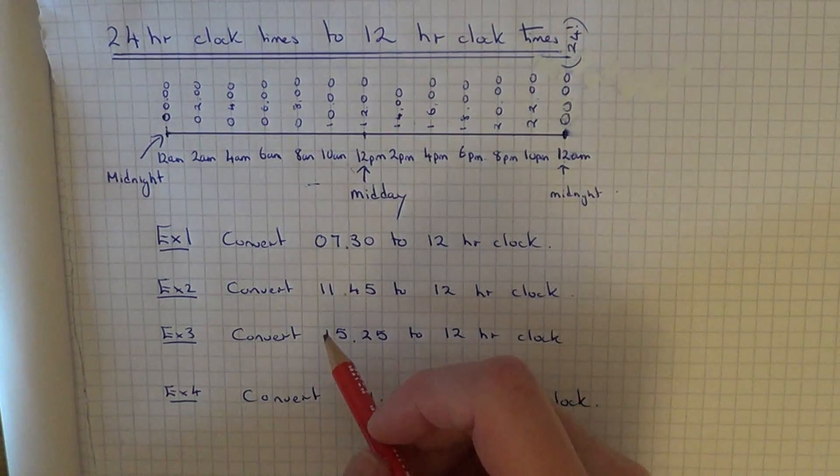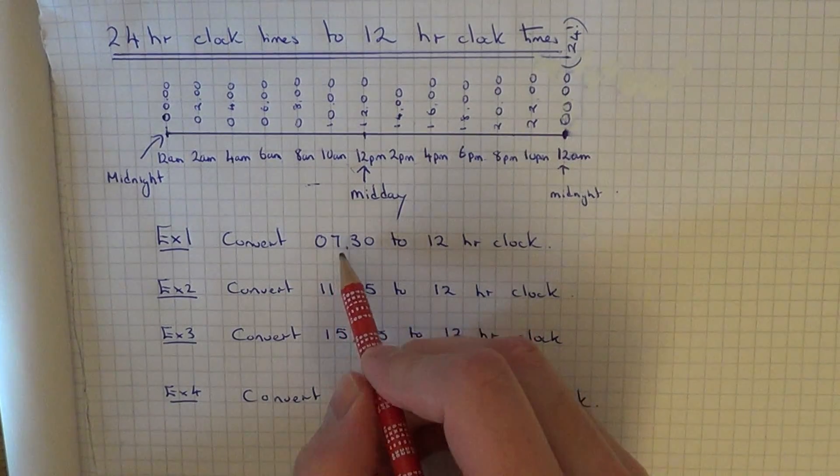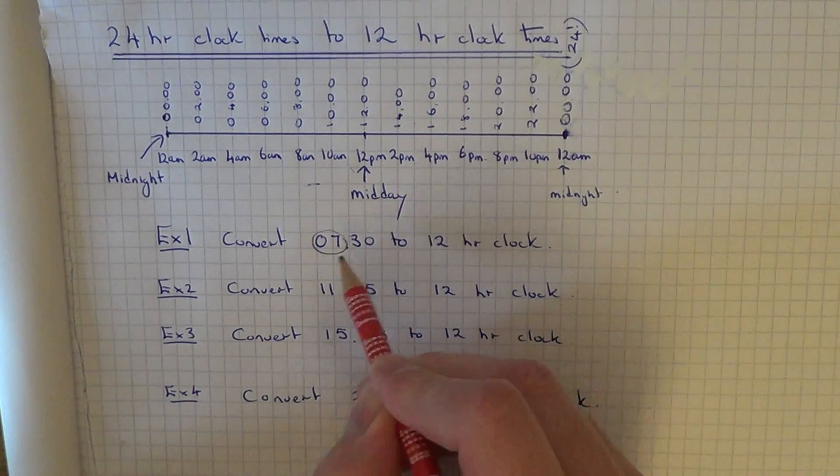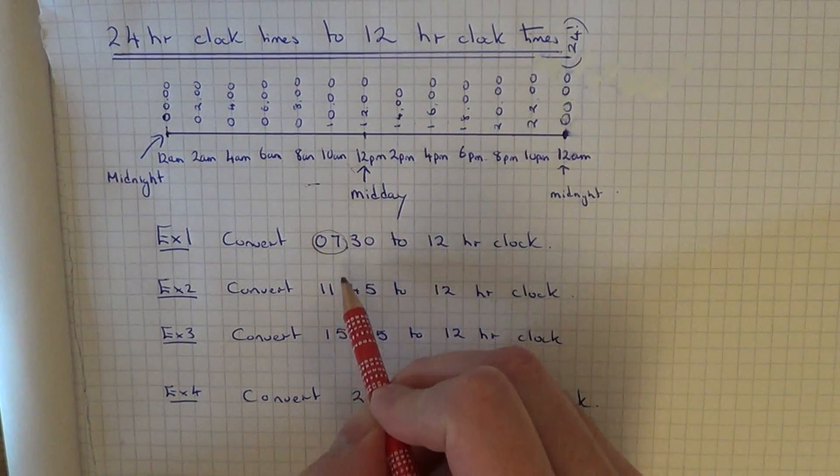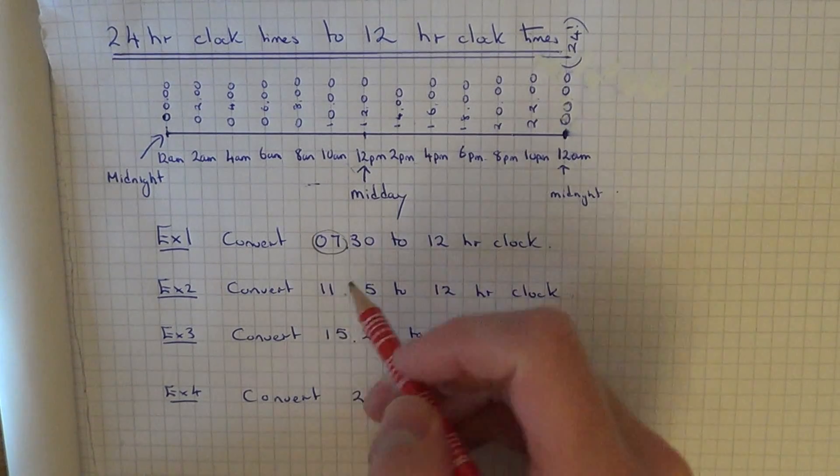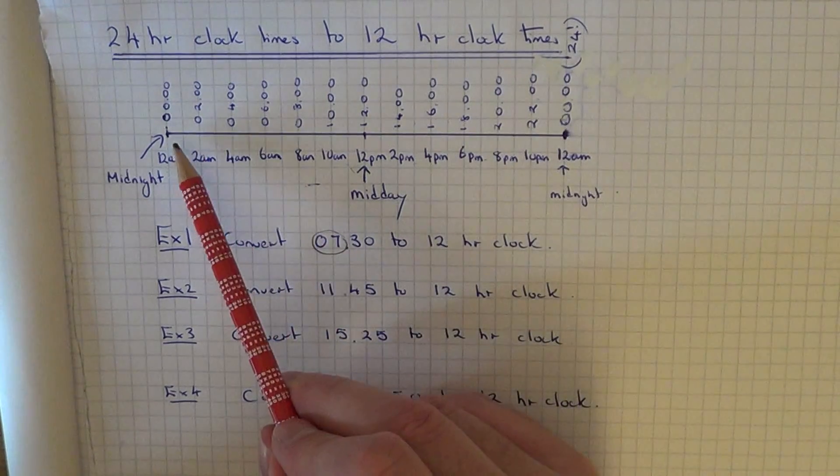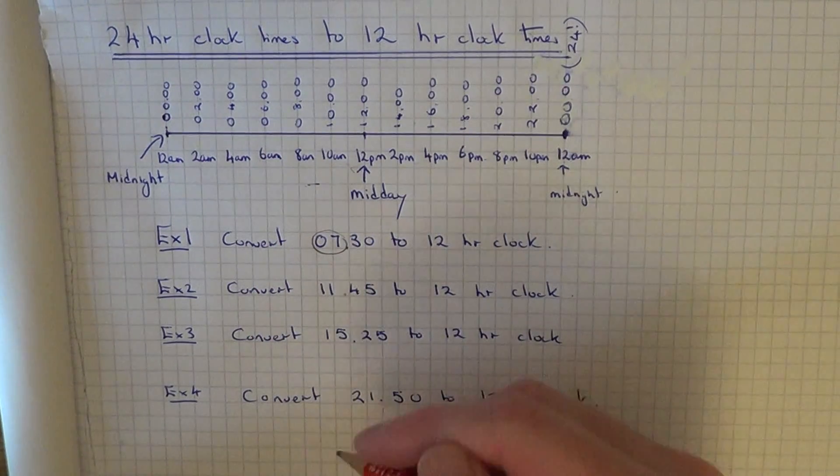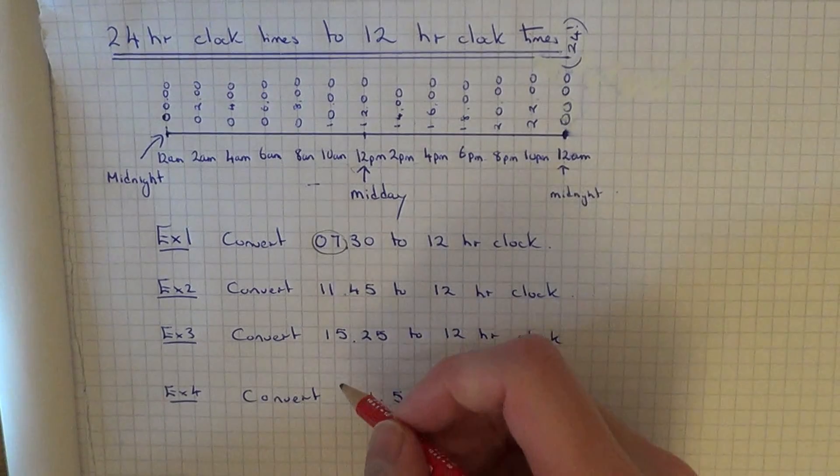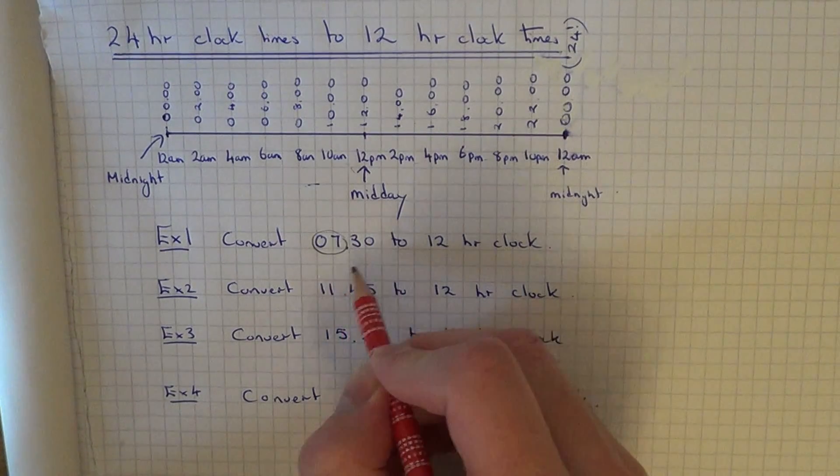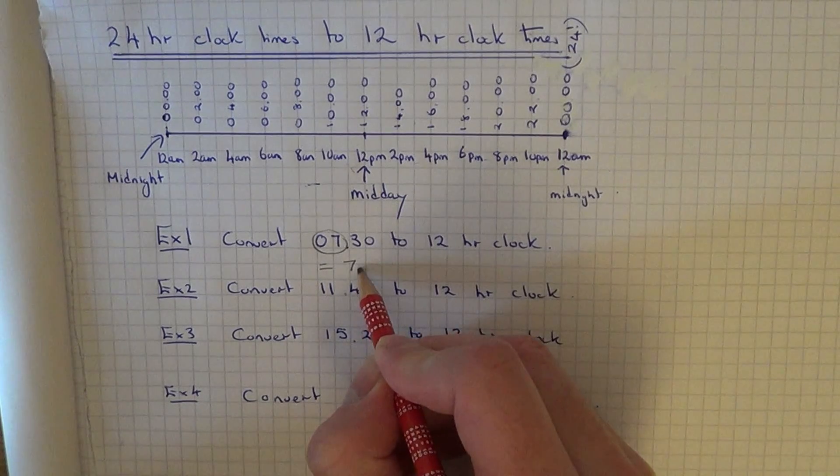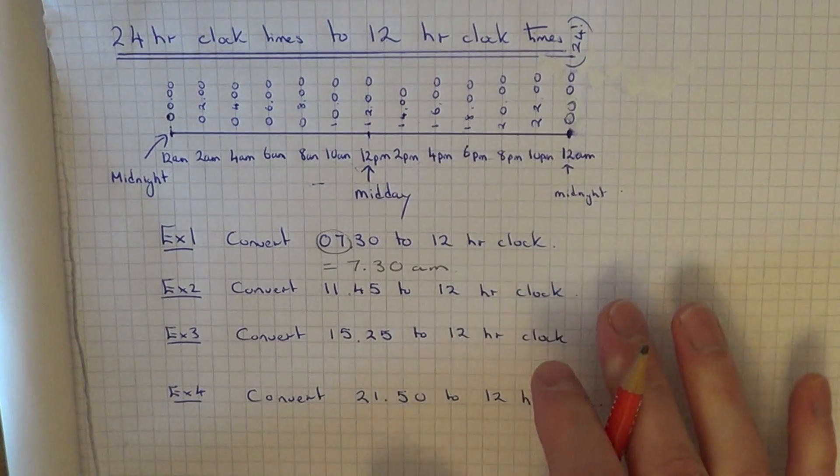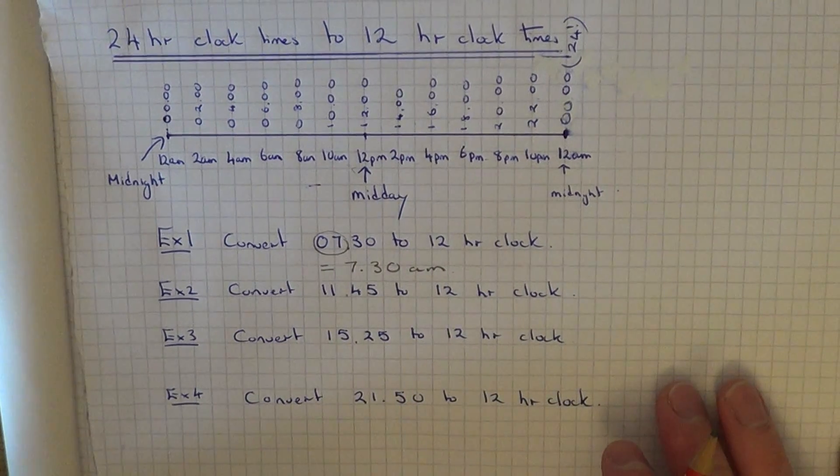To do this, first of all we just need to focus on the hour part of our time. The minute part we don't need to do anything with. Now, if the hour part is underneath 12, then this means that the time is in the morning. So remember the morning times we don't have to do anything with because these stay exactly the same. So if it's 07:30, this will be exactly the same as 7:30. Just make sure you put the AM on underneath.